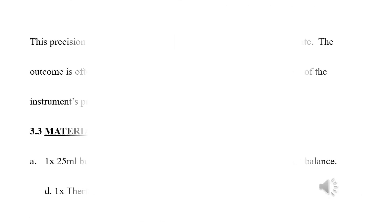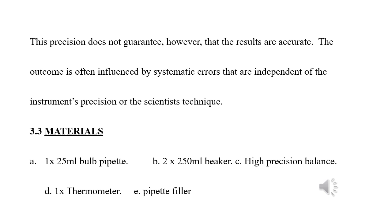This precision does not guarantee, however, that the results are accurate. The outcome is often influenced by systematic errors that are independent of the instrument's precision or the scientist's technique. The materials to be provided are a 25 milliliter bulb pipette, two beakers of volume 250 milliliters, a thermometer, a high precision balance, and a pipette filler.